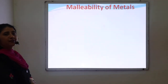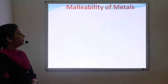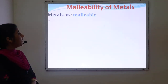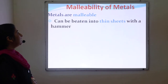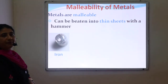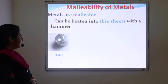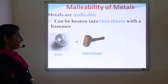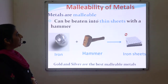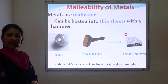The second physical property of metals is malleability. Mostly metals are malleable in nature, meaning they can be beaten into a thin sheet with the help of a hammer. For example, iron metal when beaten with a hammer is converted into a thin sheet. Among the various metals, gold and silver are the best malleable metals.